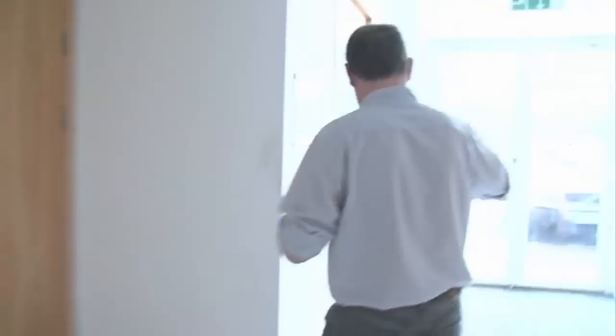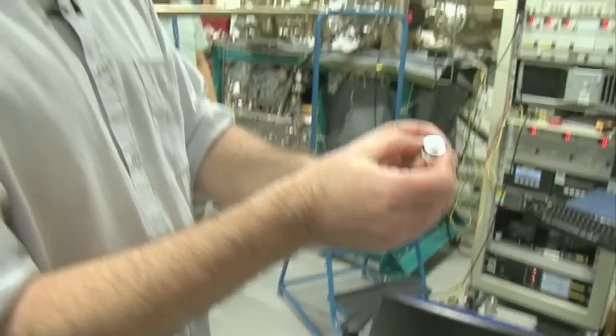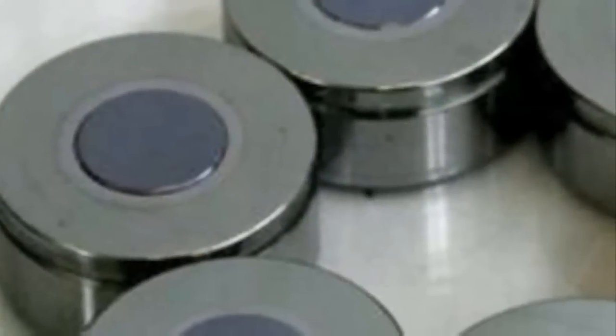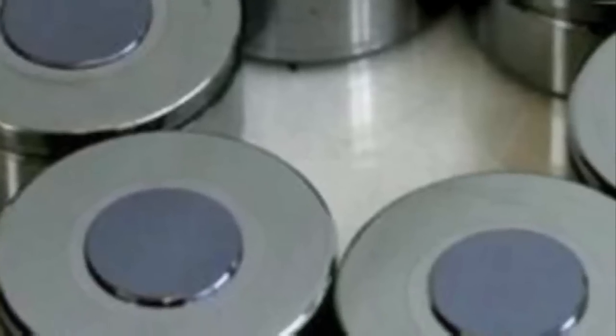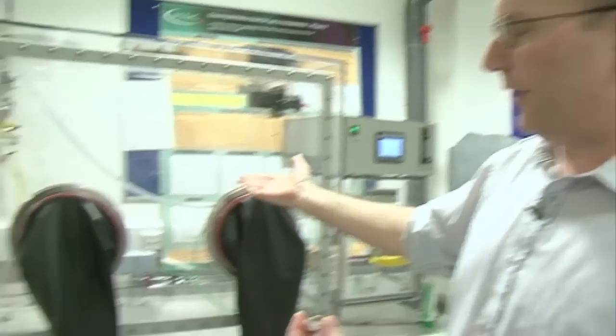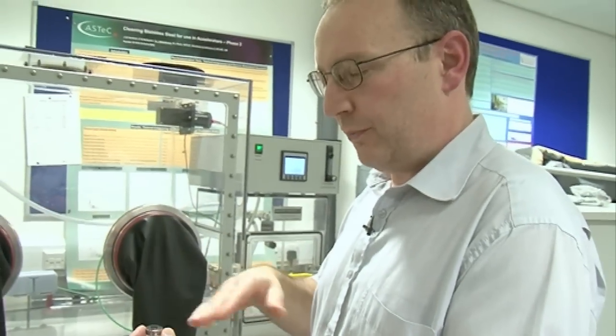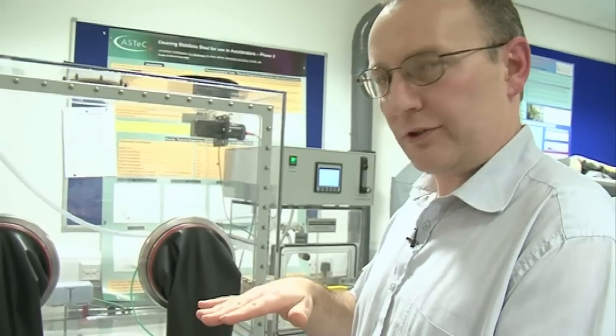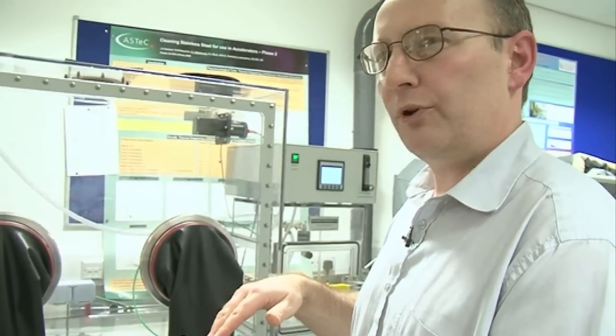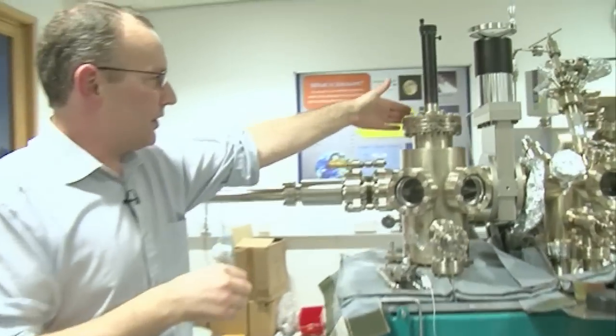So I guess now I need to show you where we make the photocathodes for our electron gun. Coming back to our photocathode, these are made for us at the Institute of Semiconductor Physics in Novosibirsk in Siberia. They send them to us and we unpack them inside this glove box under a nitrogen atmosphere and then we carry out a few chemical treatments to remove any contaminants or oxide layer off the surface. And then we put them into what we refer to as a transport vessel.